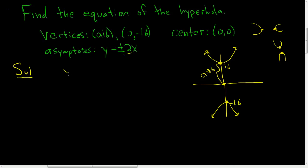Well, when it opens up and down, the equation of the asymptotes with center (0,0), it's plus or minus a over b times x. So it looks like we can use a over b and 2 to solve for b.